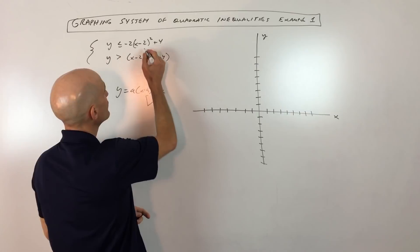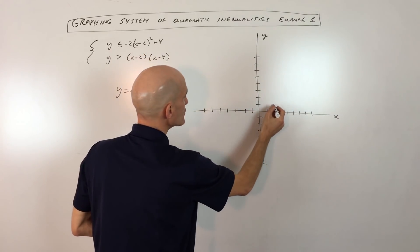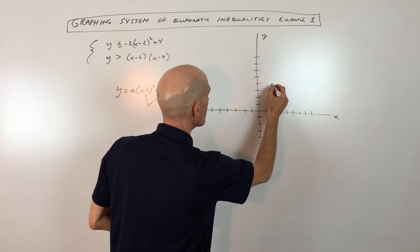So let's graph this. It looks like the vertex is at positive 2, positive 4. So that's 1, 2, 3, 4, right about there. That's your vertex.